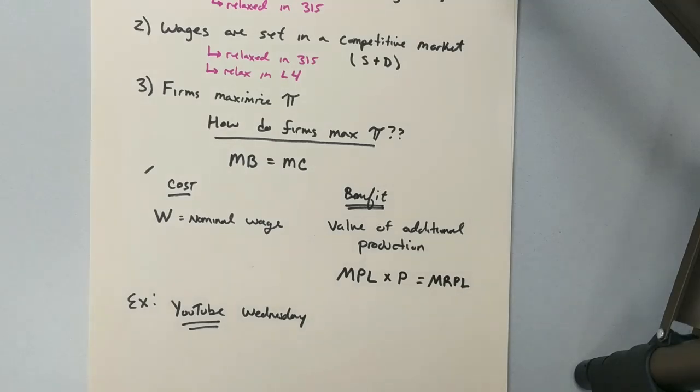And so we multiply that by P, which will then get us MRPL, or marginal revenue product of labor. In your notes that'll be posted, it'll say we're going to do an example, but that's going to be posted on YouTube, which is what this video is going to be. So let's go ahead and do this example.